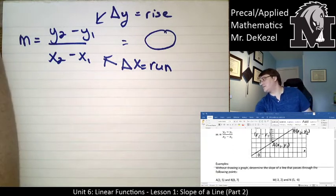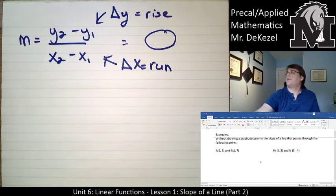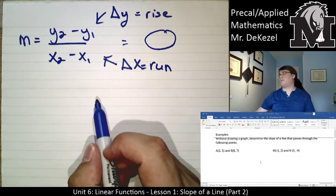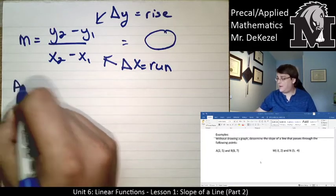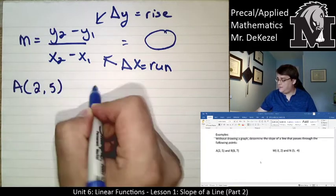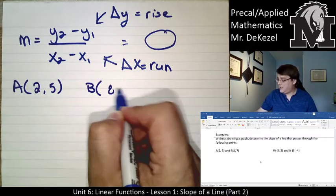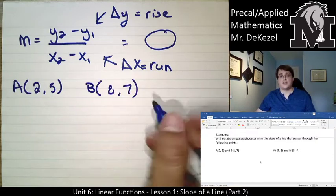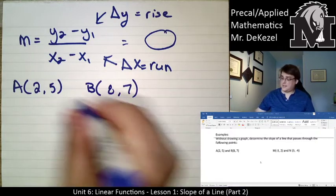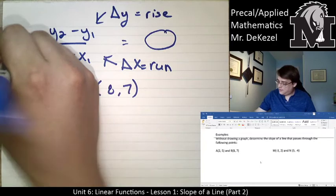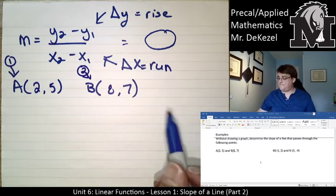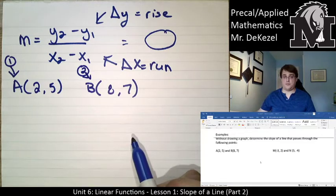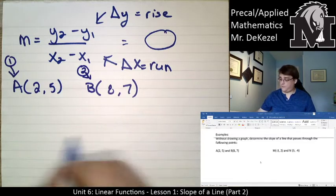Let's get to some examples. So, without drawing a graph, determine the slope of a line that passes through the following points. We have a, 2, 5, and b is 8, 7. So, let's designate this point 1 and this point 2. Now we have them labeled. We can plug them into our formula.